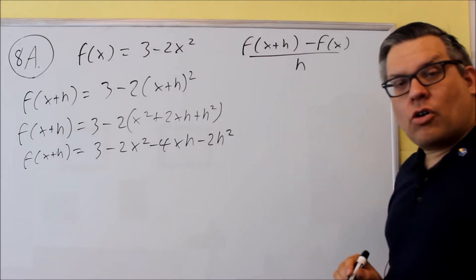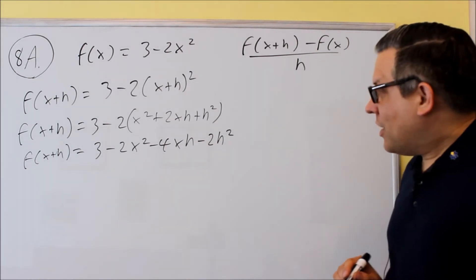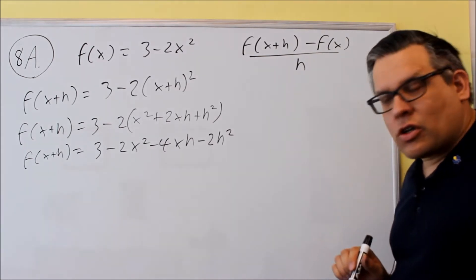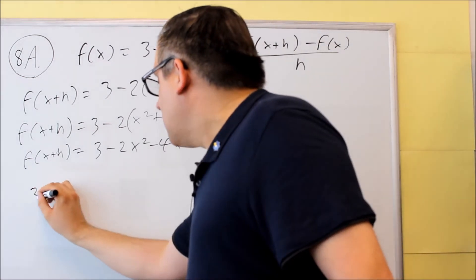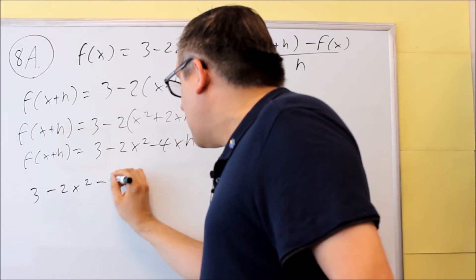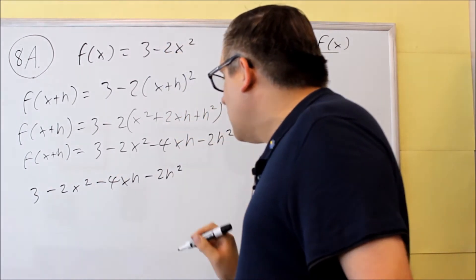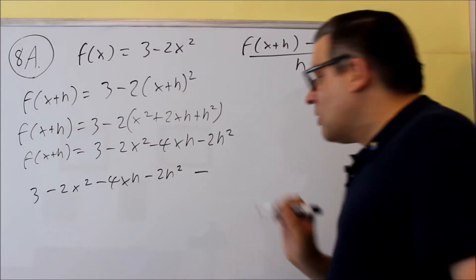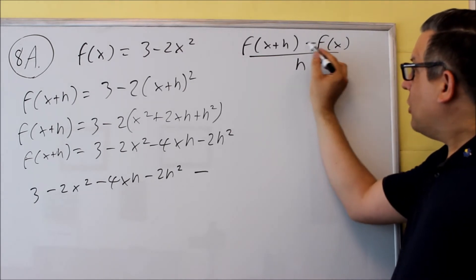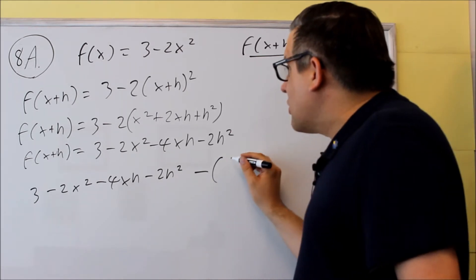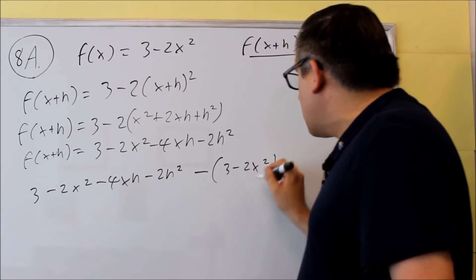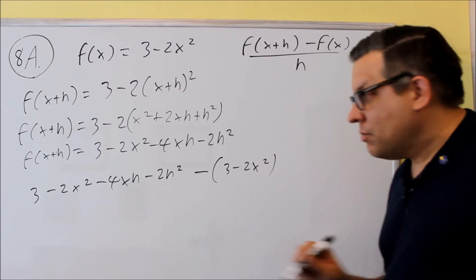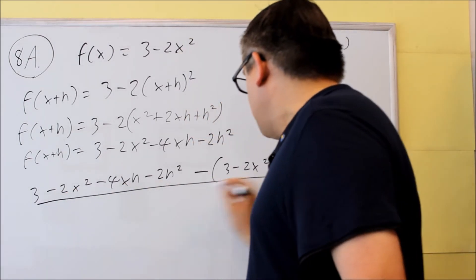This would be as far as you could go with that answer. Now we're ready to put it into the formula. So first I've got 3 minus 2x squared minus 4xh minus 2h squared — this whole thing is your f of x plus h — minus sign, which is the minus sign in the formula. Then in parentheses I'm going to put 3 minus 2x squared, in parentheses to remind myself that I have to distribute the negative all the way through. All this is over h.